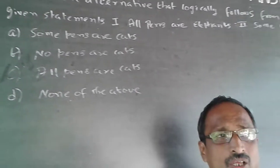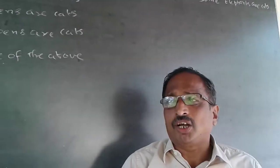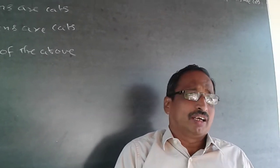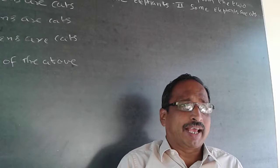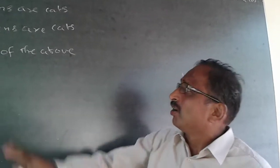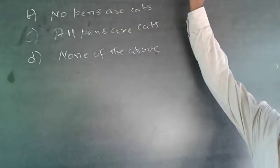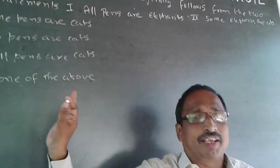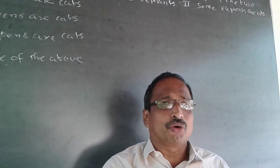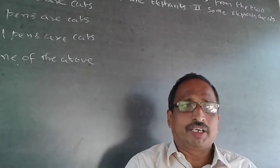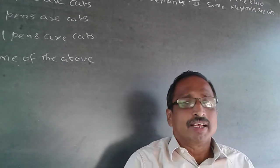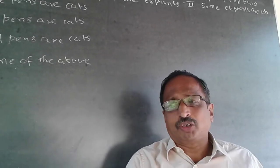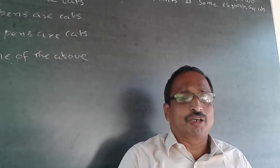These are all known as syllogism problems in logical reasoning. Don't go by the exact meaning of the words — pens, cats, elephants — the exact meaning doesn't matter here. It is only the flow. They only want you to check the flow of the statements. Some books call it particular positive, particular negative, universal positive, and so on.